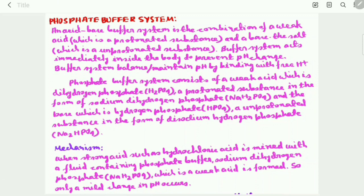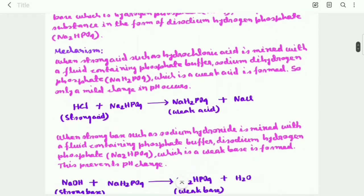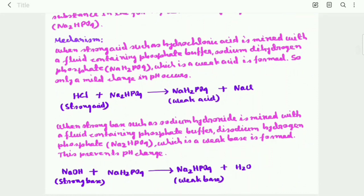Now the mechanism of phosphate buffer system. When strong acid such as hydrochloric acid HCl is mixed with a fluid containing phosphate buffer, sodium dihydrogen phosphate NaH2PO4, which is a weak acid, is formed. So only a mild change in pH occurs.